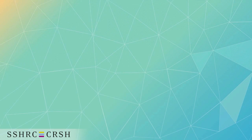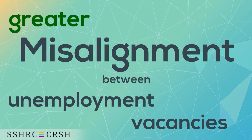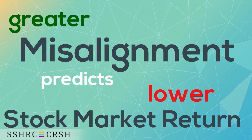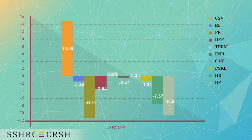Specifically, when our measure indicates greater misalignment between unemployed workers and vacant job positions, it is very likely that the market return will be lower in the near future. We compare the predictive power of our indicator with a set of well-known stock market predictors and show that our measure outperforms pretty much all of these variables.